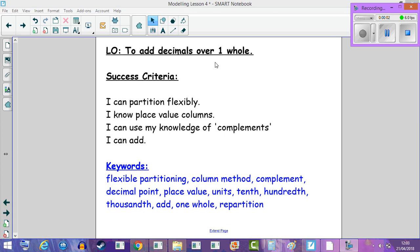So today we are adding decimals over one whole. Our success criteria is to partition flexibly, know our place value columns, use our knowledge of complements which we did the other day, and adding to make one whole.